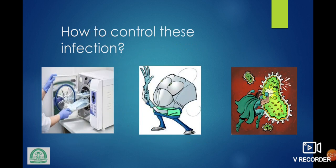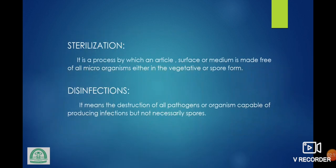How to control this infection? By sterilization and disinfection. What is sterilization? It is a process by which an article, surface or medium is made free of all microorganisms either in the vegetative or spore form. What is disinfection? It means the destruction of all pathogens or organisms capable of producing infection but not necessarily spores.